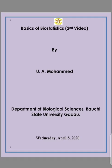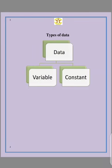Biostatistics basically deals with a particular phenomenon which is called data. Data is a very important phenomenon, basically a raw fact or any information, and we have various types of data. This could be a variable or a constant. When you collect your data from an experiment it is called a variable; when you collect your data from records it is called a constant.